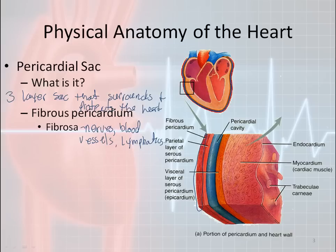The fibrosa also contains part of the lymphatic system. Because it contains nerves, blood vessels, and lymphatics, it is easy for this layer to become infected. That's where we get pericarditis in people who have that condition.